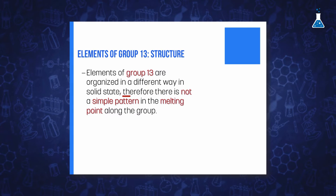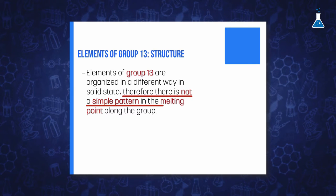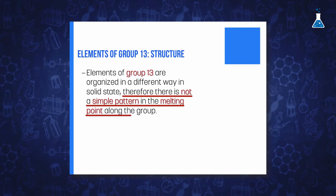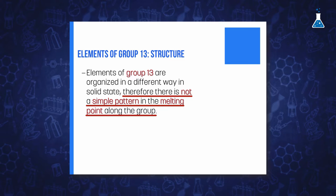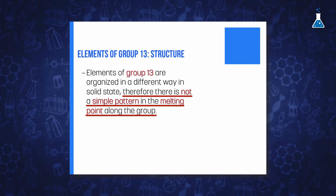These irregularities of ionization energies are present in other properties. For example, these elements have no simple pattern in their melting points, given that each element in the group is organized in a different way in the solid phase.